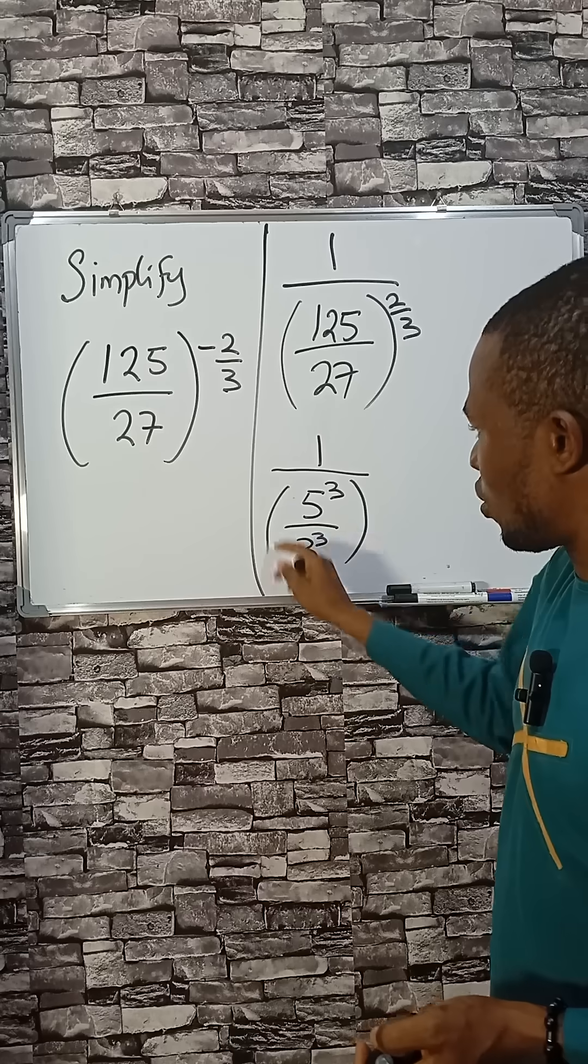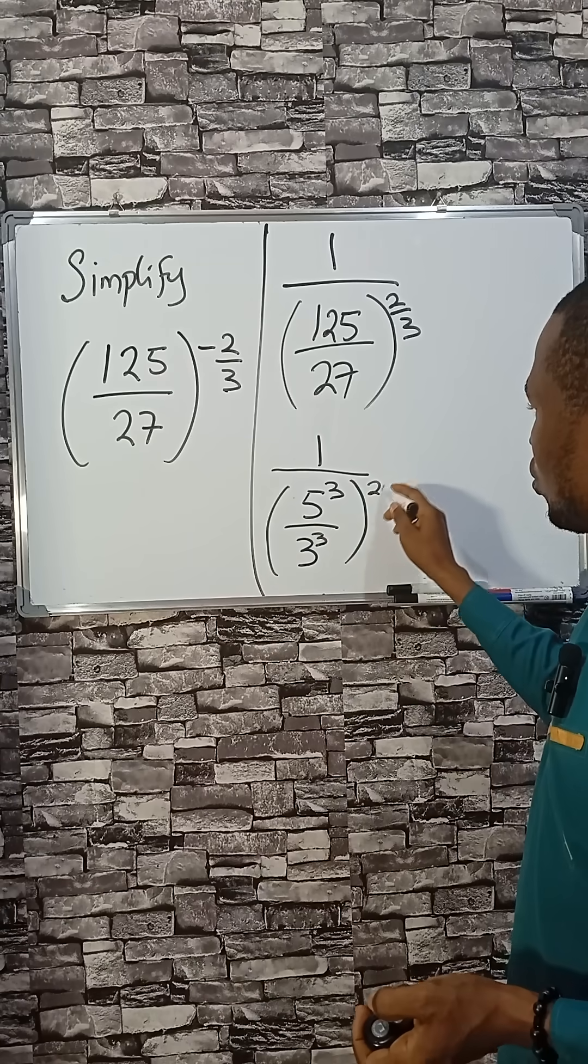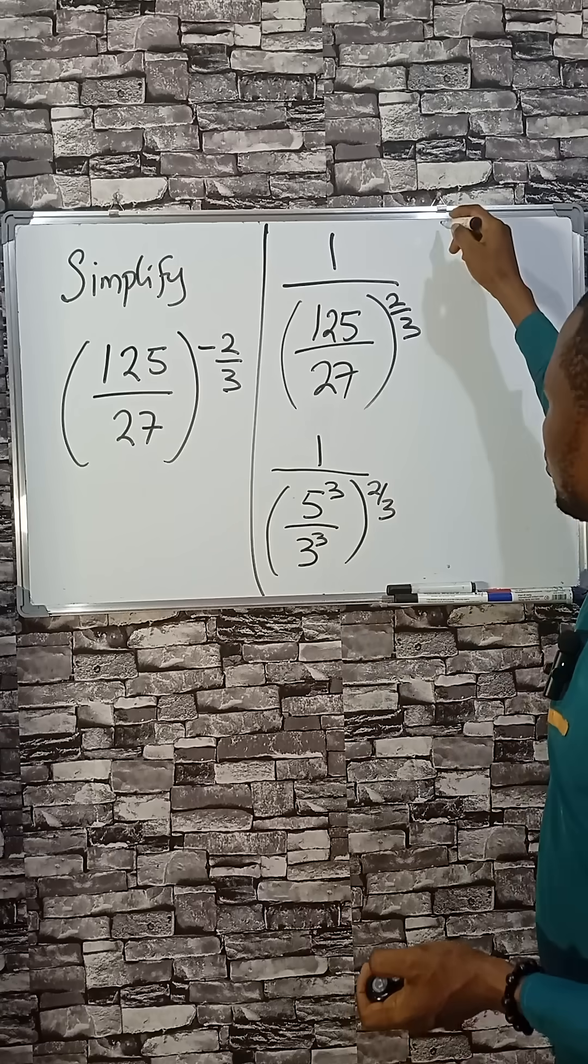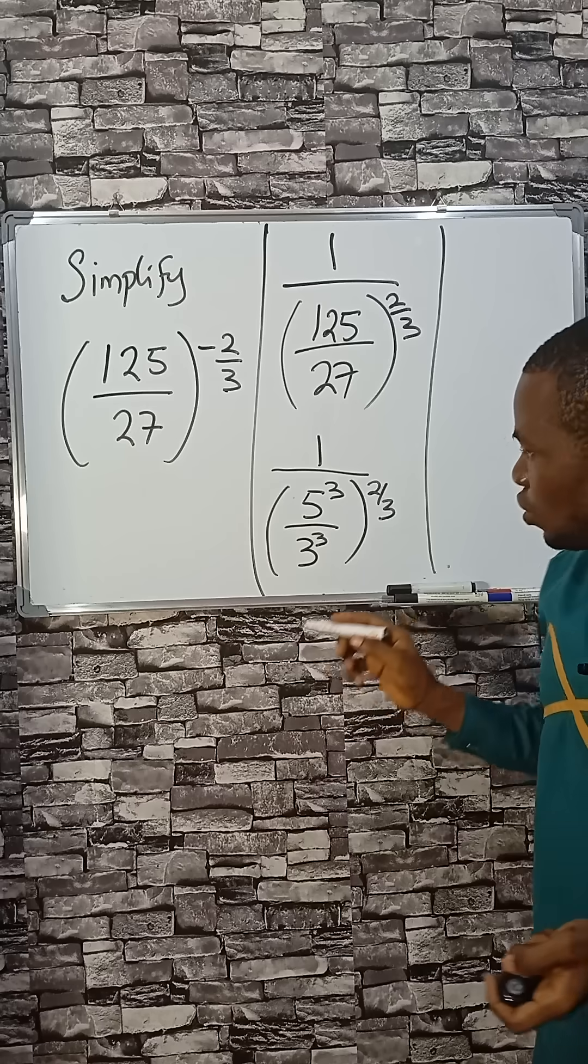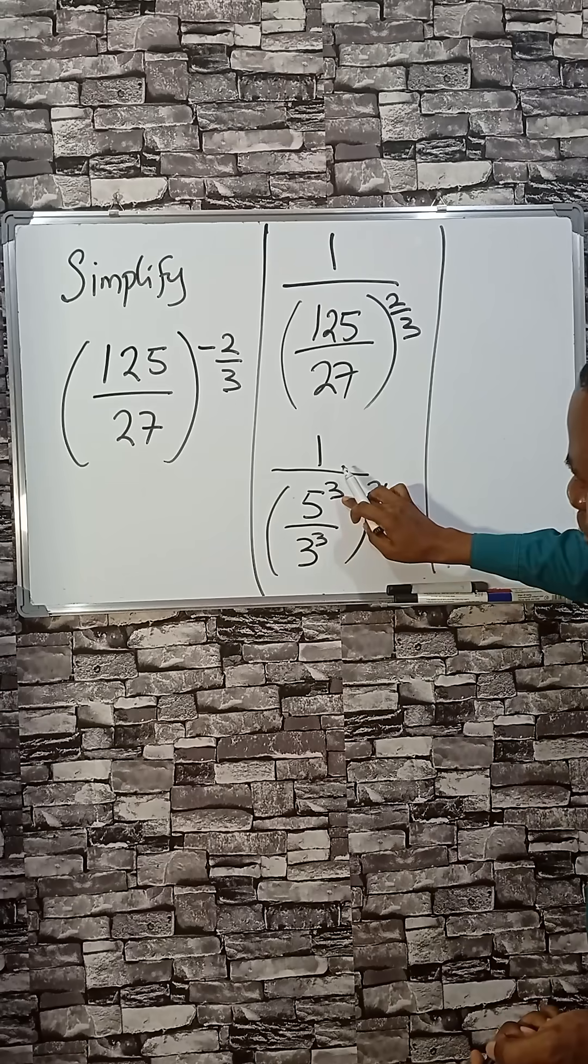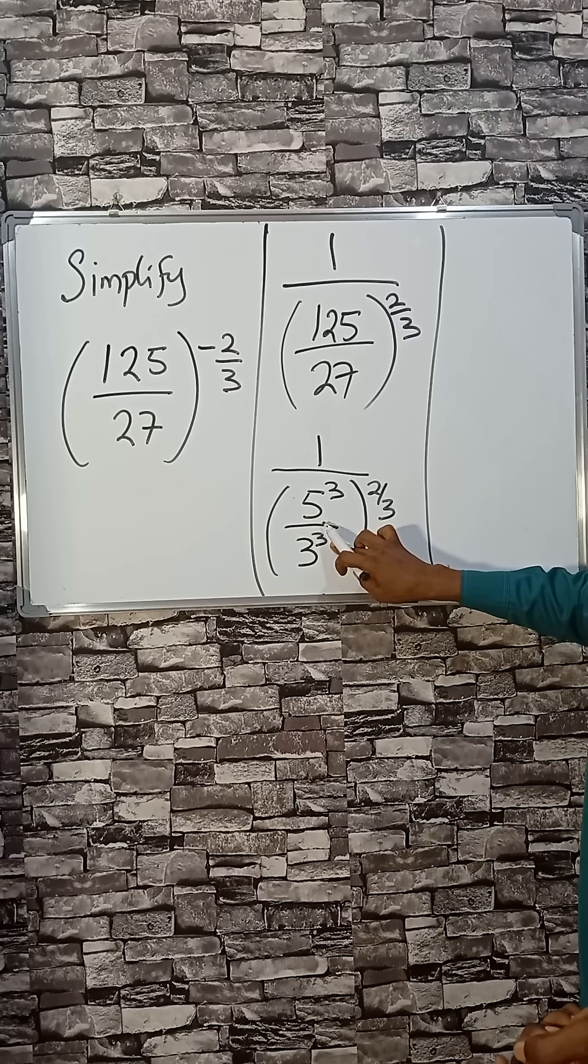All raised to the power of 2 over 3. So since they have 3 here, 3 here, that means 3 is common.